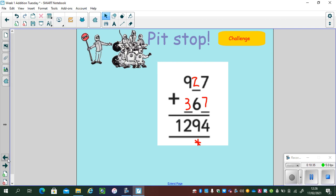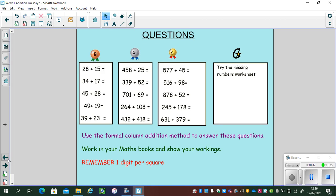So here are your bronze, silver, gold questions. They are also in the team's support page today, but you could just pause the video here. Use the formal column addition method to answer these questions in your blue maths books. Make sure you show your workings for every question and remember to do one digit per square. Unpause the video when you have finished so we can come back and do the answers together.